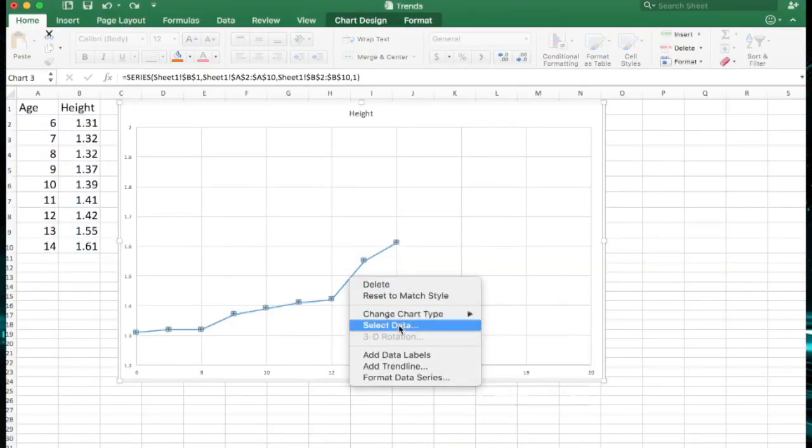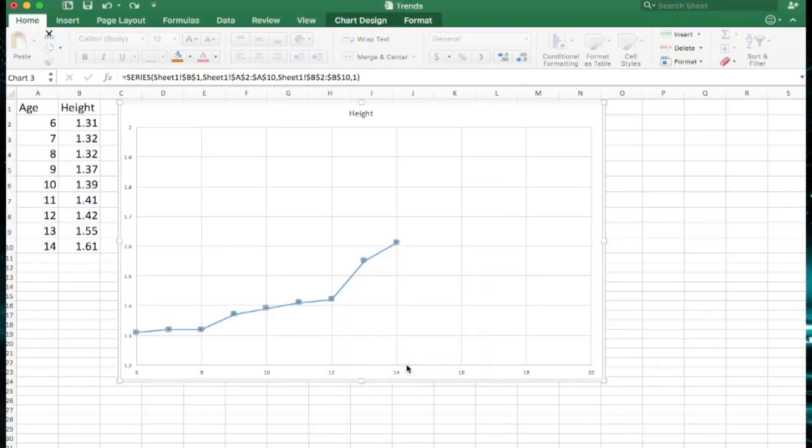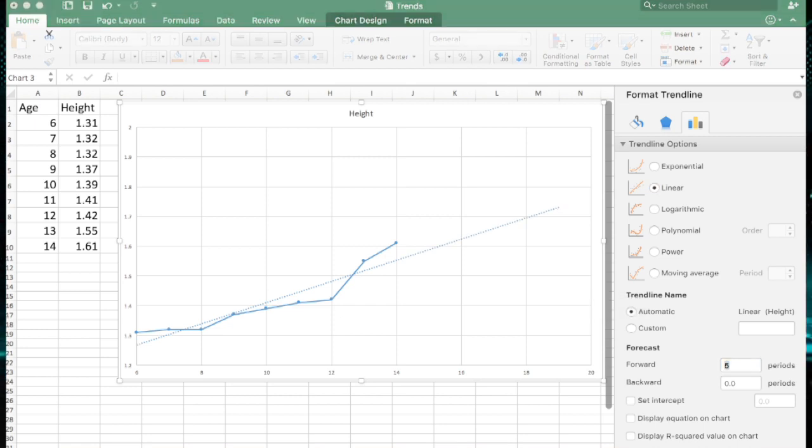Once enough data has been collected, it can be extrapolated into the future by continuing the trend, often represented using graphs, with the trend line continuing past the current date.